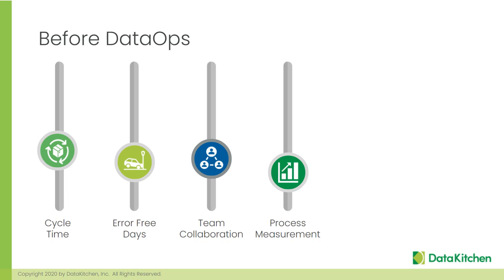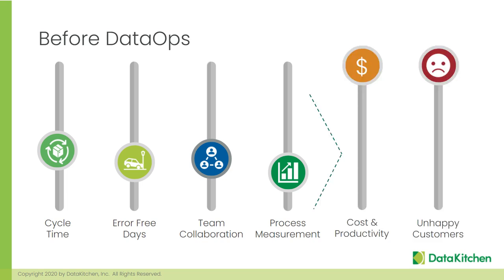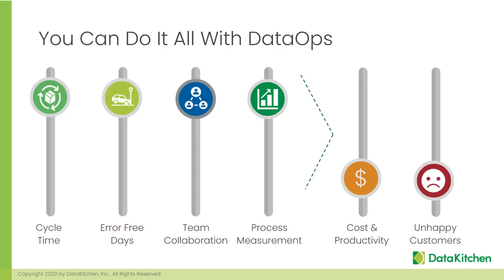A lot of companies aren't doing very well on this. Their cycle time is measured in weeks not days, they have errors left and right, customers don't trust the data, there's a lot of central IT vs. self-service team conflict, and no one's really measuring error rates and cycle times. Our experience with companies deploying our product to do DataOps is that they end up in a better place — they can deploy fast with very, very low errors. That's the push: you can go fast and not break things, iterate quickly and not get yelled at for making mistakes.